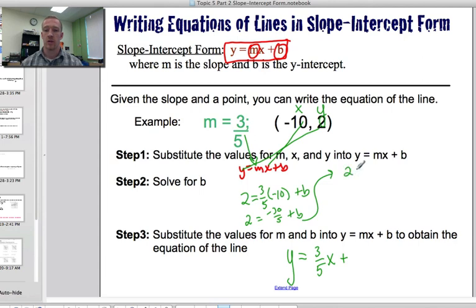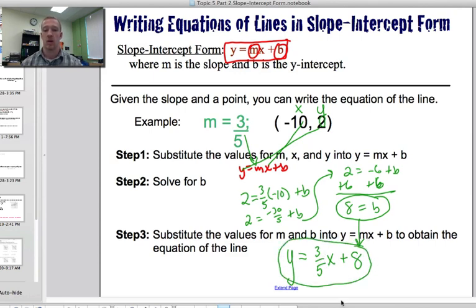So I have 2 equals negative 30 over 5 is negative 6 plus b. So now I solve for b. So 8 equals b. Now, I'm not done. I just found my y-intercept. So now I want to plug that in and say my y equals mx plus b equation is y equals 3 fifths x plus 8. That's it.